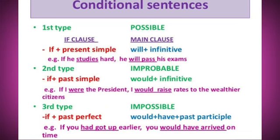Now we can see the structure of the conditional clauses. First, probable condition: the if-clause will be in simple present tense, and the main clause will be 'will plus infinitive'. Second, improbable condition: the if-clause verb will be in simple past tense, and the main clause will be 'would plus infinitive'. Third, impossible condition: the if-clause will be in past perfect, and the main clause will be 'would have plus verb 3'.